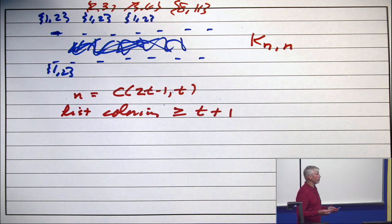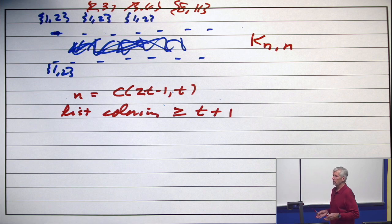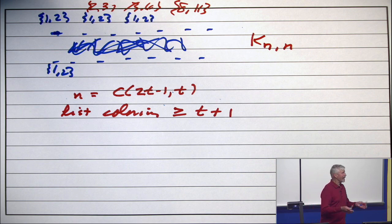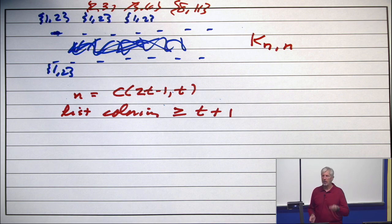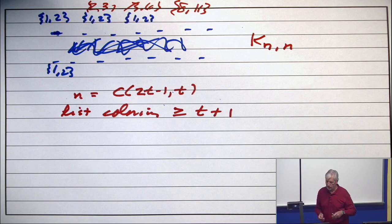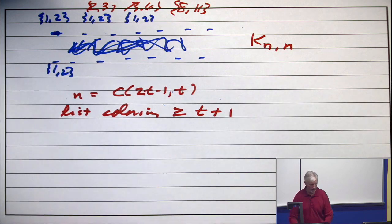And the explanation is trivial. If you only have 2t minus 1 colors, and you can't use the same color on opposite sides, then there's one of the two sides which only has t minus 1 colors on it. And there's only t minus 1 colors. There's a subset that you missed, and so you didn't color that one. Just think about it to make sure that that's correct. So the point is that list coloring can be much harder, much harder than ordinary coloring.